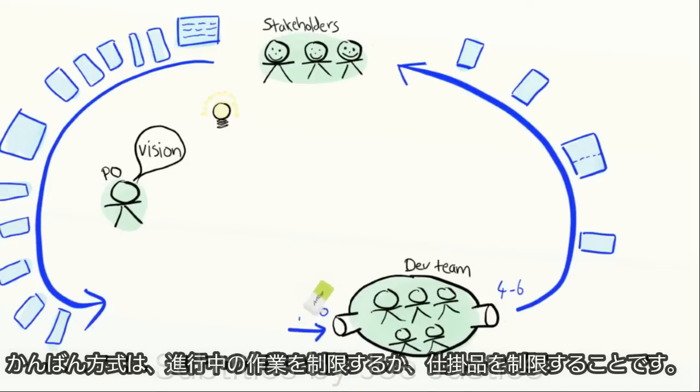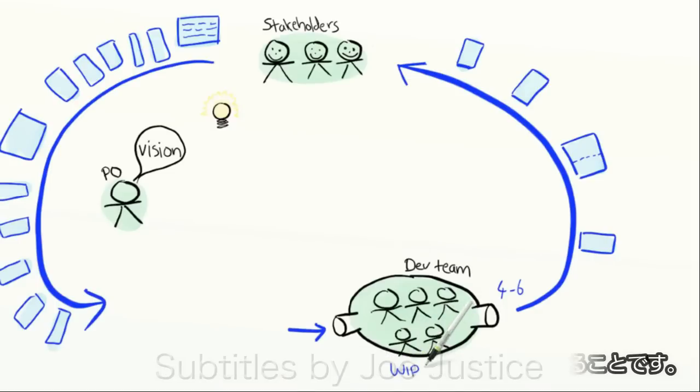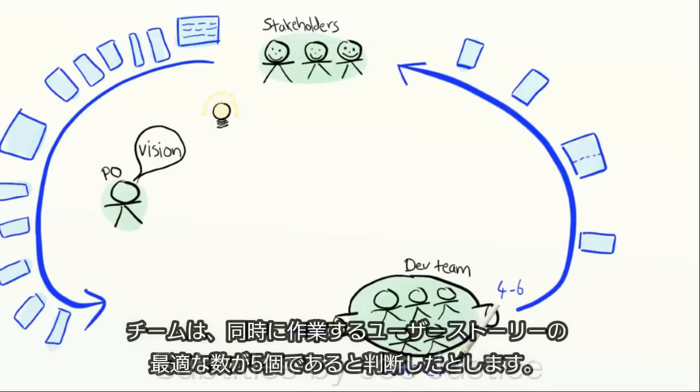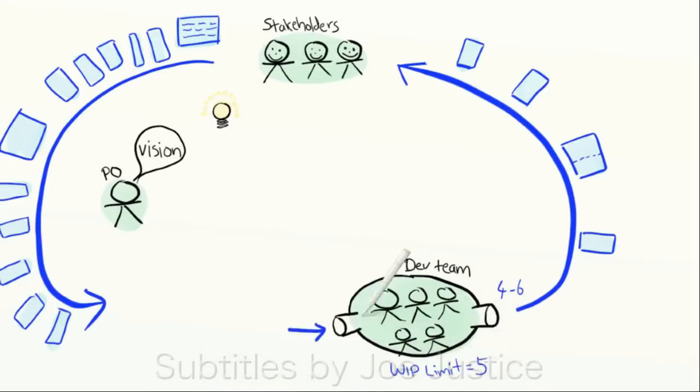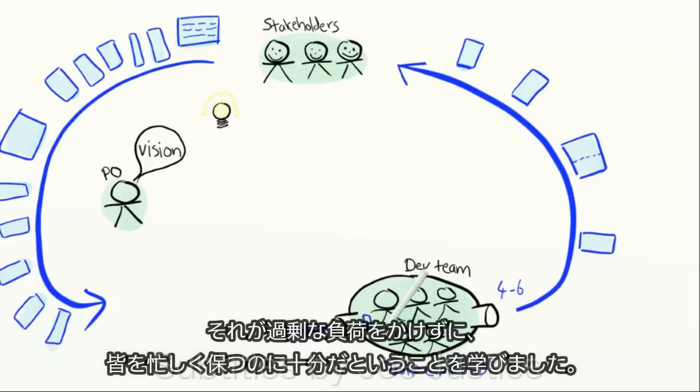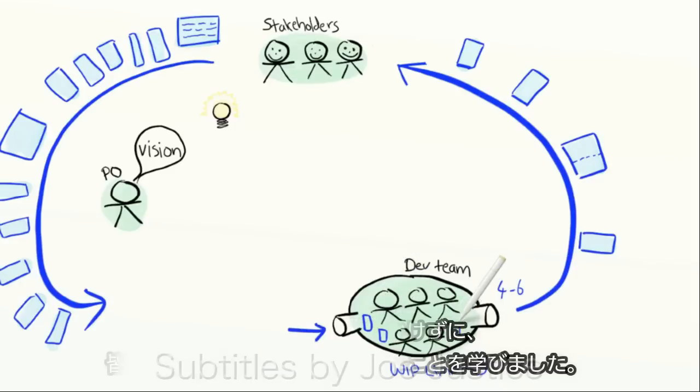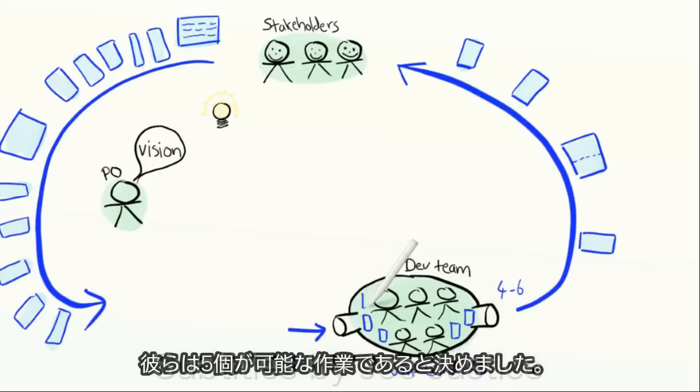The Kanban way is to limit work in progress, or limit WIP (W-I-P). Suppose the team decides that five is the optimal number of stories to be worked on simultaneously. They've learned that that's just enough to keep everybody busy without causing overload. So they decide that five is their WIP limit.